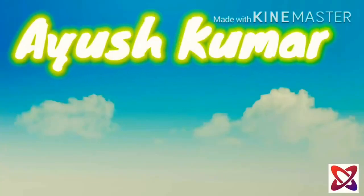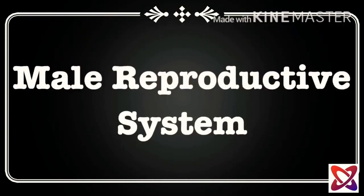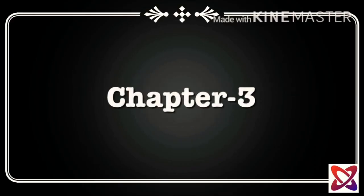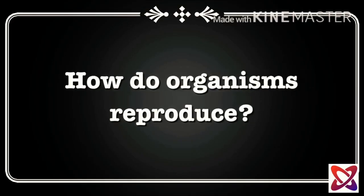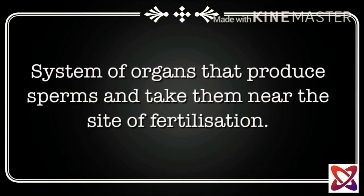Hello, my dear friends, welcome to Learning Hub. Today in this lecture we are going to learn about part fifth, that is the male reproductive system, of chapter three of biology class 10th — 'How Do Organisms Reproduce.' The system of organs that produce sperms and take them near the site of fertilization is the male reproductive system.